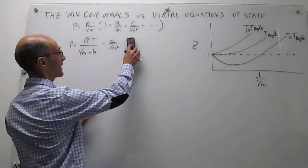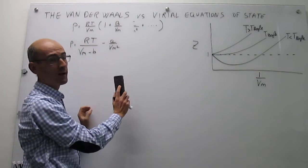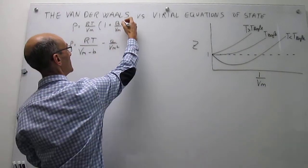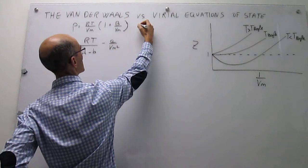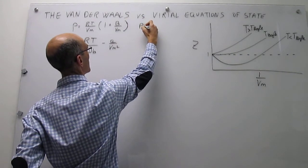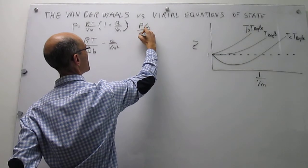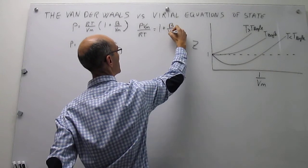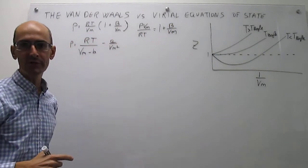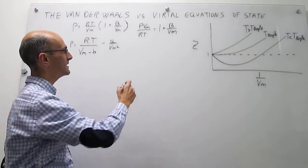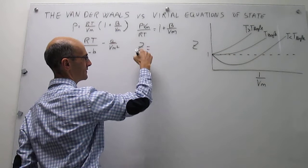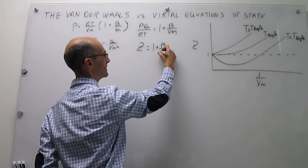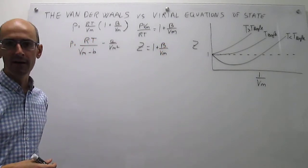When you cut the expansion to just two terms, you ignore higher order terms. You can rearrange this to recognize that PVm over RT equals 1 plus B over Vm. That ratio of pressure multiplied by molar volume divided by RT is simply the compression factor by definition, so Z equals 1 plus B over Vm in the two-term Virial expansion.